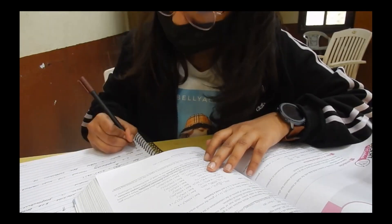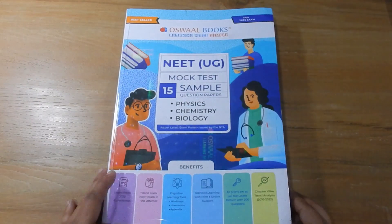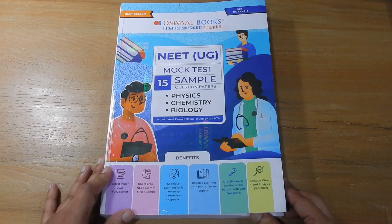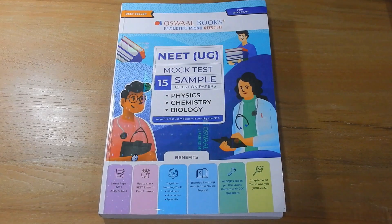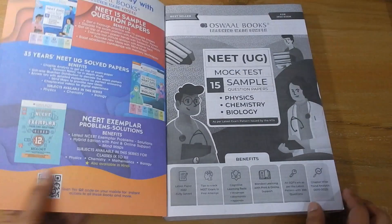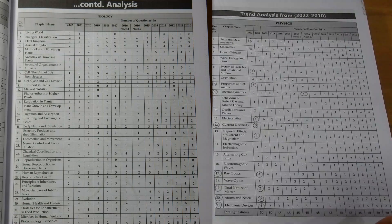Now the thing is from where to practice these questions. You can use this book - NEET UG Mock Test 15 Sample Question Papers from Oswald Books. In this book you will get all three subject sample question papers. First of all you will get this trend analysis which will help you to know how many questions are asked from a particular chapter and which chapter is more important.